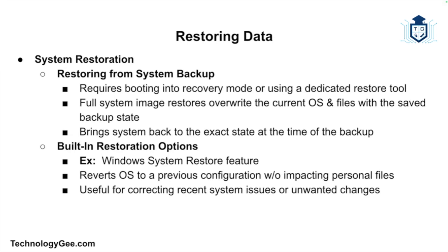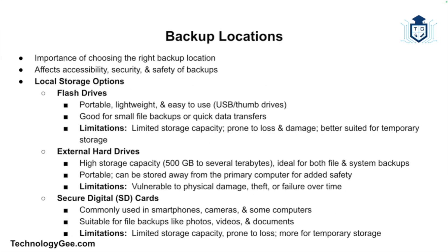System restoration is more complex, often involving booting the computer into a recovery mode or using a dedicated system restore tool. In the case of a full system image, the backup software will overwrite your current operating system and files with the saved backup, bringing your computer back to the exact state it was at the time of the backup. Many systems have built-in restoration options, such as Windows System Restore, which lets you revert the operating system to a previous configuration without affecting personal files. Regular backups and a clear understanding of your restore options are critical for a smooth recovery.